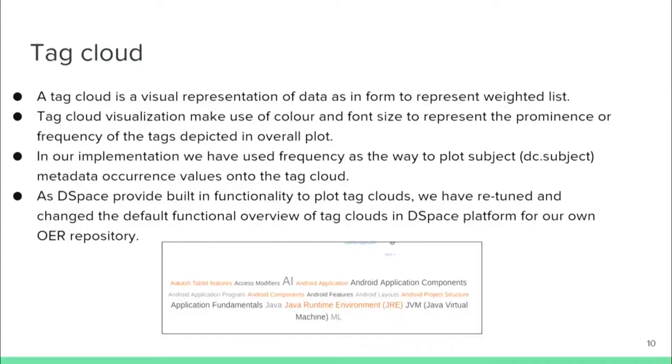In the discovery module we implemented three things. First is the tag cloud — a visual representation where each keyword or subject is given a weight in terms of font size and color. Items used or accessed more often get more weightage, making them visually prominent and more attractive to users.